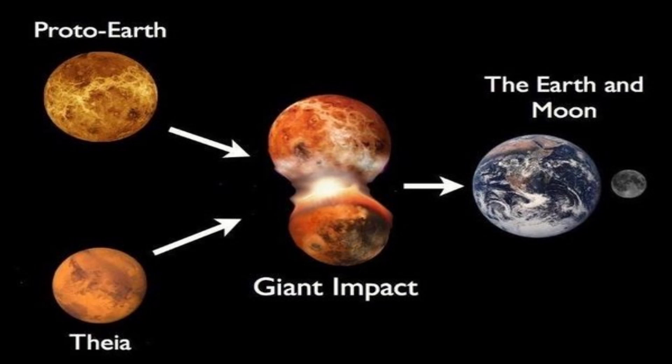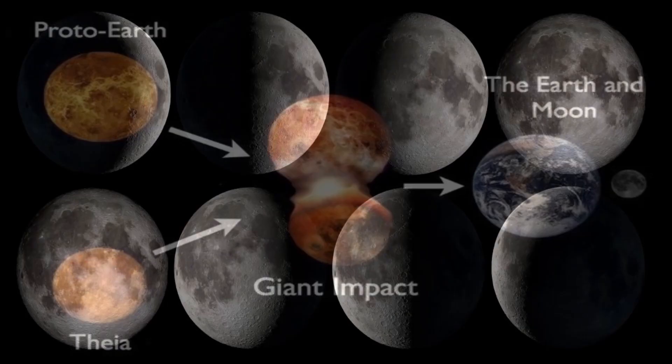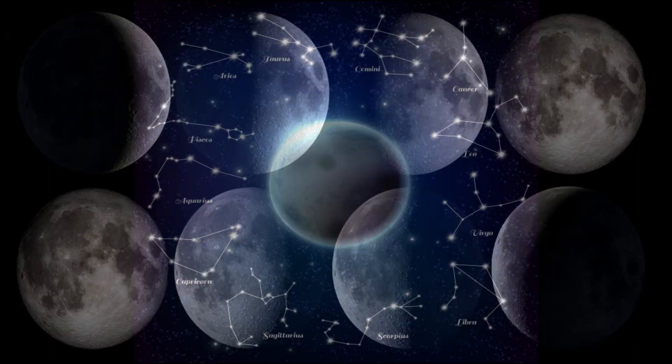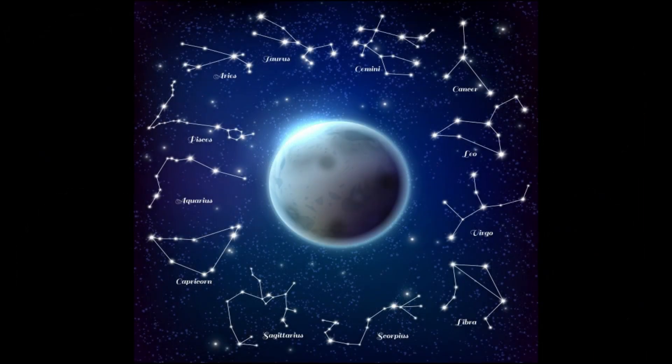Some exobiologists hypothesize that if it were not for the moon, life on earth would not exist as we know it. Metaphysically we are concerned with the cycles of the moon, the position of the moon in relationship to the zodiac signs, and the eclipses.